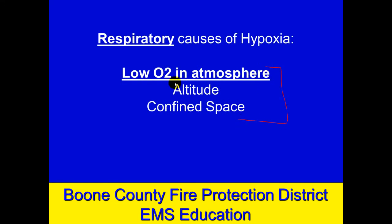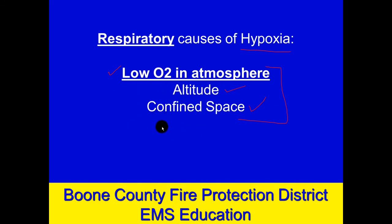Respiratory causes: one very simple one — low incoming oxygen to the lungs. If the lungs, cardiovascular, and neural systems are all intact, but you're simply breathing in air that's low in oxygen, then there's going to be a low amount of oxygen delivered to the tissues, causing hypoxia. Where do you find that? At altitude, or in confined spaces that are not appropriately ventilated. Very uncommon, but worth including in a comprehensive look at the causes of hypoxia.